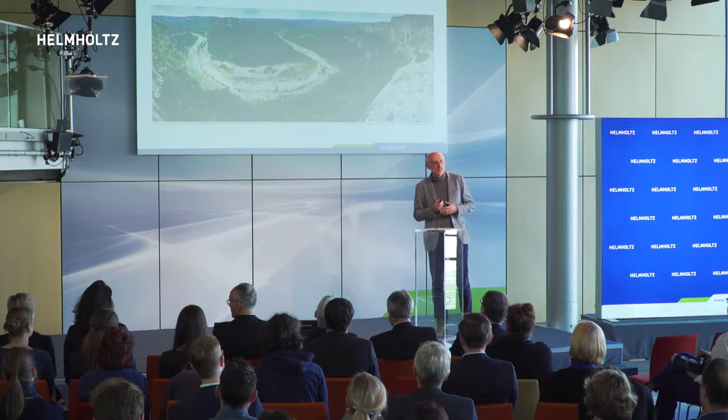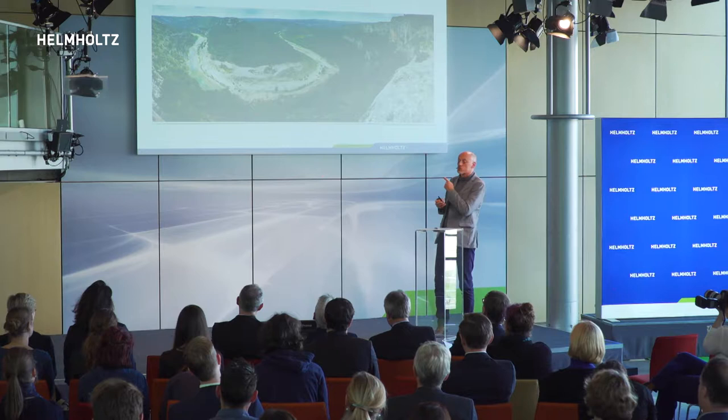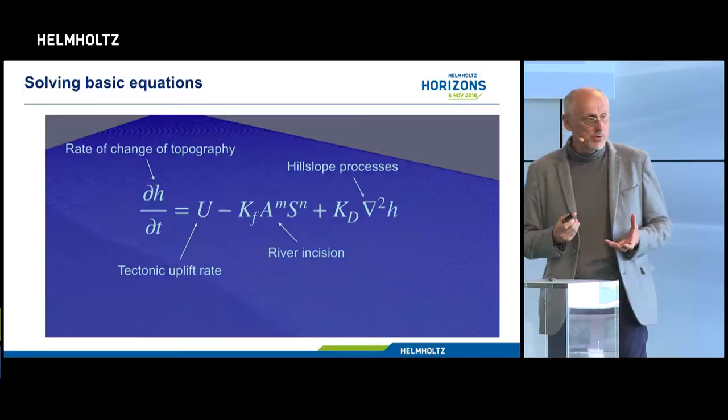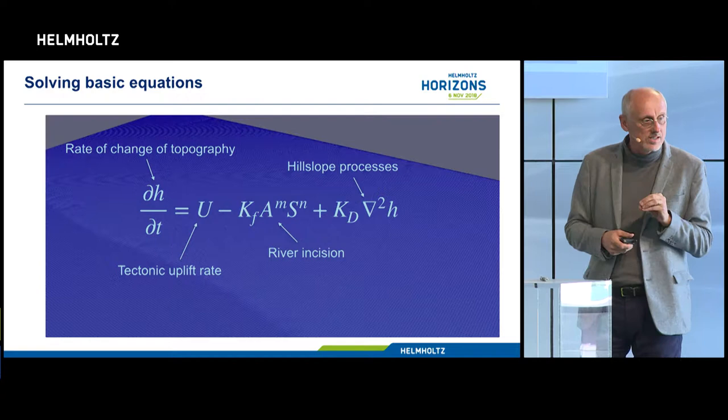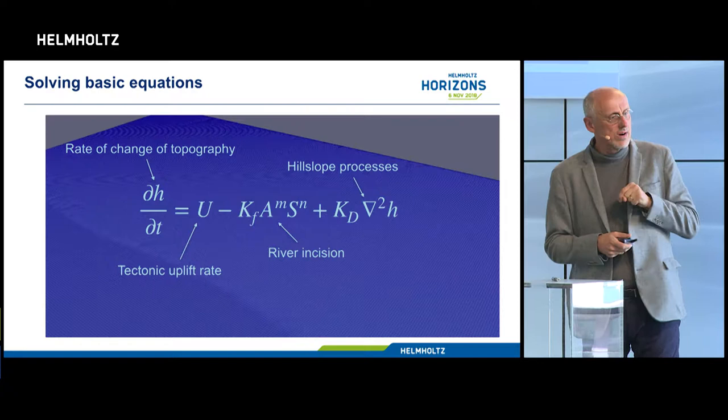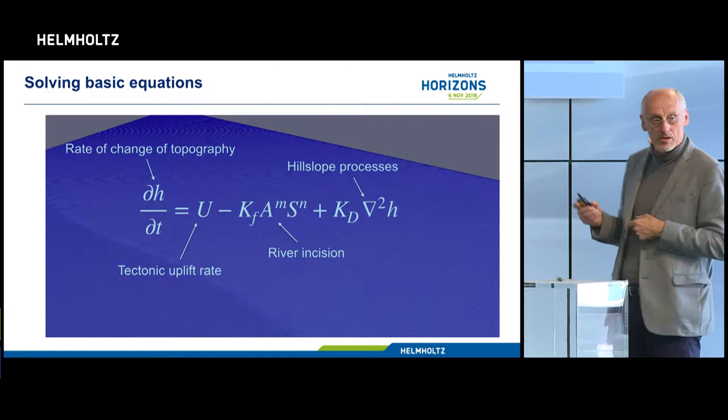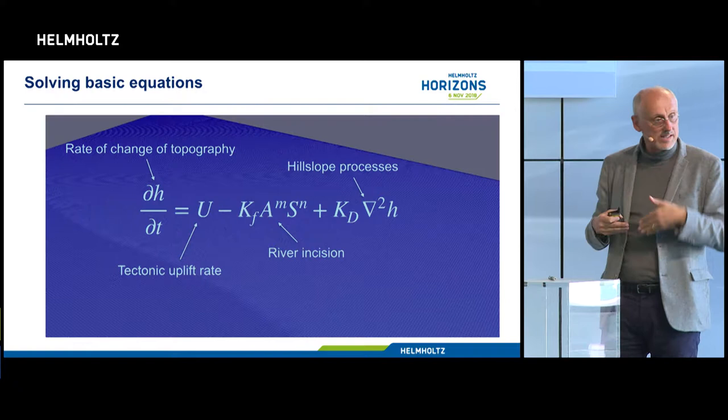The field of geomorphology has seen two major advances in recent years. One is due to dating techniques that we now have developed to constrain the rate at which a landscape forms over millions of years. The second is computer modeling. I take equations like the one I've shown you, and each term corresponds to a process that a geomorphologist has constrained by going into the field — measuring, for example, the rate of incision of a river, which is proportional to slope and to drainage area.